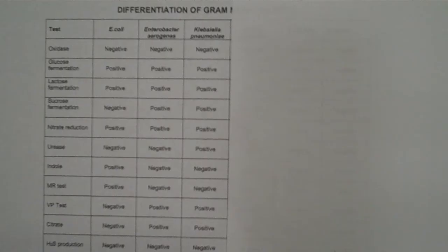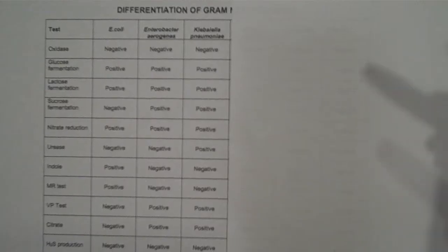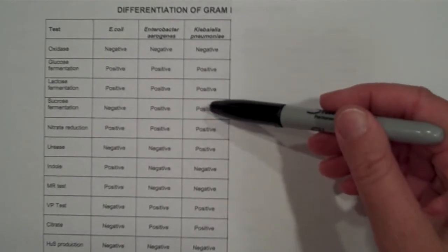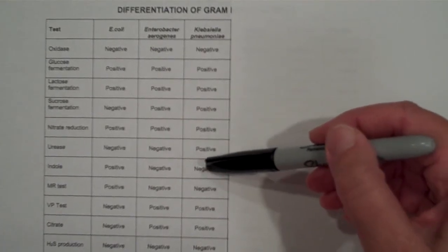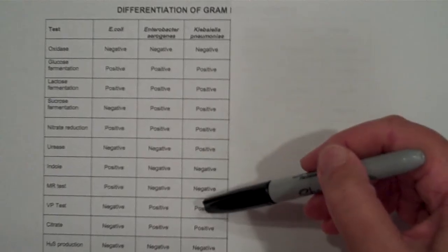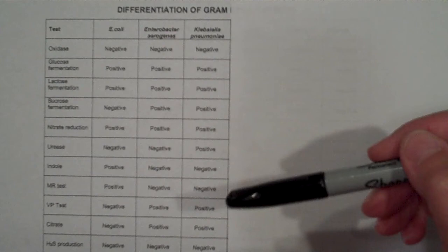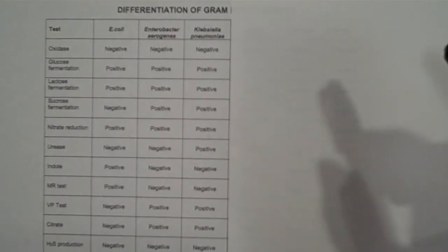There are going to be a bunch of options here — pick tests that you feel comfortable performing and interpreting. For example, we could do sucrose fermentation, urease, indol, MR, VP, or even citrate. Just pick a test that you feel comfortable with. I'm going to do indol.